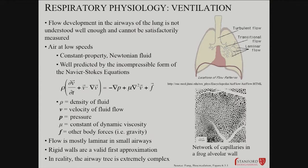The flow is complex. At low speeds, it's a Newtonian fluid with constant properties — the incompressible form of the Navier-Stokes equations, involving fluid density, velocity, pressure, viscosity, and a term for other body forces. This helps us understand flow at low speeds. As a first approximation that actually works, you can even model the walls as rigid and the flow as laminar.